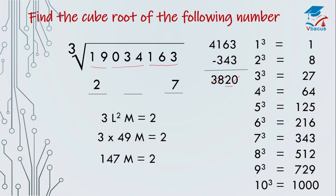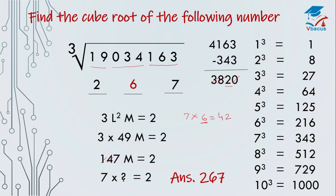3 times 49 is equal to 147. M equals 2, which I have taken from here — that is the 10th digit. So forget the 14 and consider 7. By which number do we have to multiply 7 to get the digit at the unit place as 2? 7 times 6 are 42 — 2 is coming at the unit place — so we multiplied by 6. This 6 will come at the middle digit. So your answer is 267.